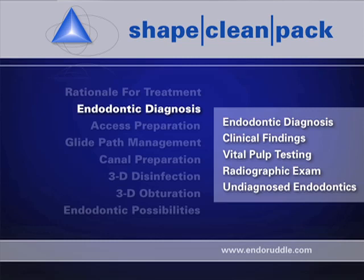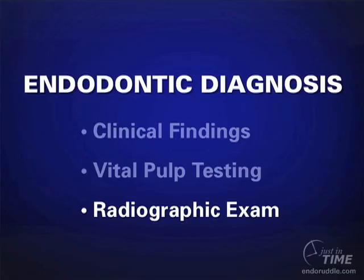Regarding the radiographic exam, I feel it's always important to take three well-angulated radiographs from different horizontal positions. A single film can show you a lesion of endodontic origin, and coupled with a vital pulp test you could probably condemn the tooth with complete confidence. However, you take the second and third angles for yourself — the doctor — because in these different horizontal angles you're going to be able to see much more than a single film alone.